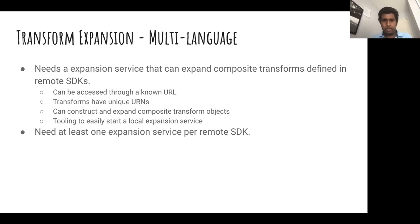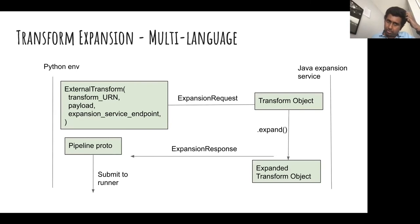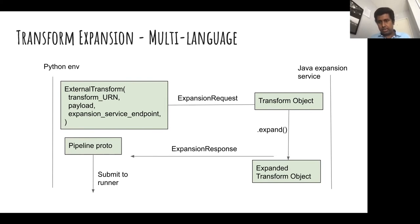You need at least one expansion service per remote SDK. So if you have a Python pipeline that uses Java parts and Go parts, you would need two expansion services. The expansion service works as follows: Python uses the External transform API to refer to the external transform, generates an expansion request RPC, and sends it to the Java expansion service. The Java expansion service creates a transform object, calls expand on it, gets the expanded transform object, creates a response, and sends it back. Python then attaches that to the larger portable definition and submits it to the runner.